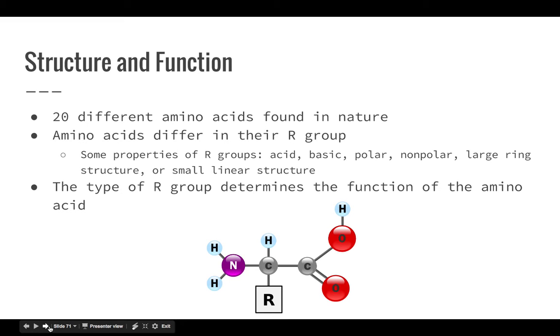So the structure and function of a protein. There are 20 different amino acids that make up the subunits of proteins. Each amino acid differs in its R group. Some R groups are going to be polar. Some are going to be nonpolar or acidic or basic, which strung together give the protein a variety of functions.